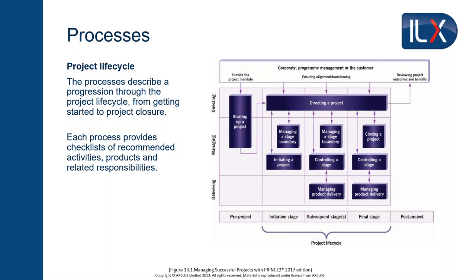For a controlled start, there are two processes. Starting Up a Project is pre-project preparation — a quick check: is there a worthwhile project, should we spend any real money on this? The manual says spend the minimum amount of time here. It produces something called the project brief and a stage plan for the first stage, initiation. This goes up to the project board in Directing, which asks: do you want to authorise initiation? If they say no, the project never existed — it's not worthwhile, let's not waste time and money on it.